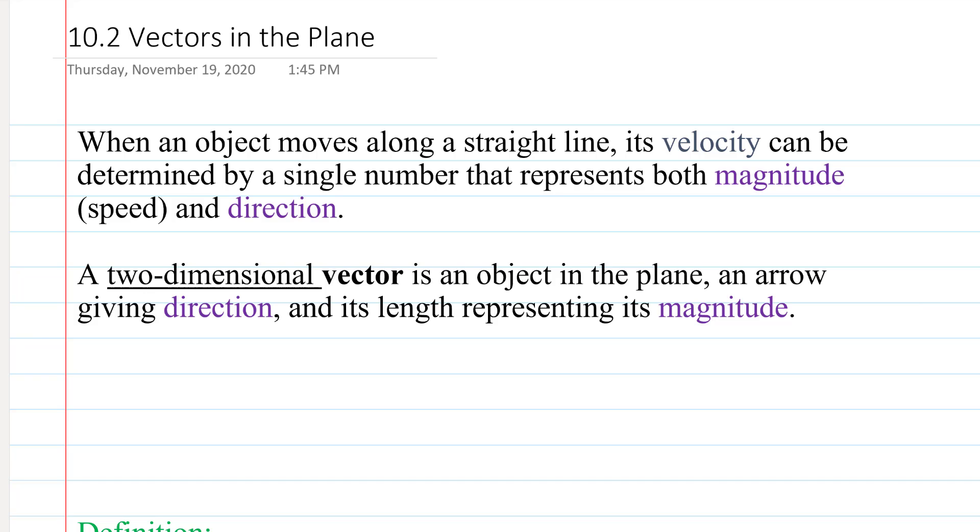When an object moves along a straight line, its velocity can be determined by a single number that represents both magnitude and direction. A two-dimensional vector is an object in the plane, an arrow giving direction and its length representing its magnitude.